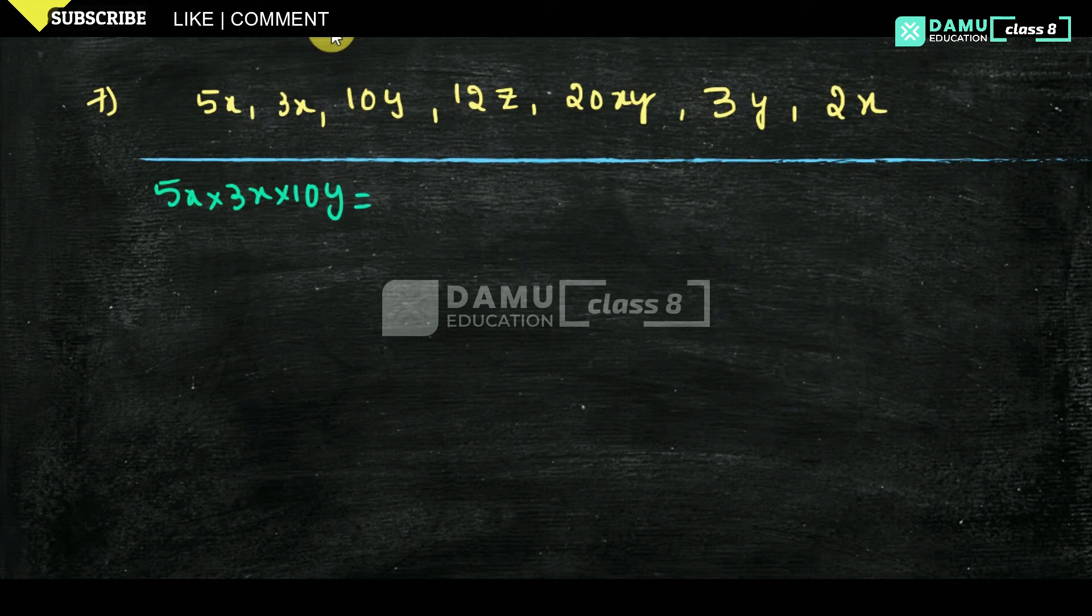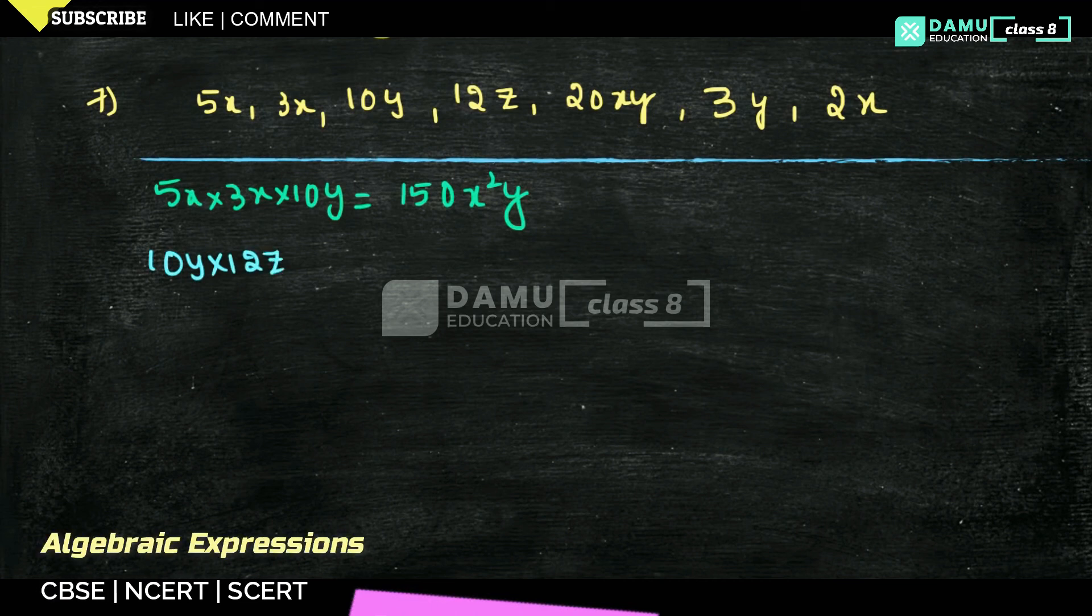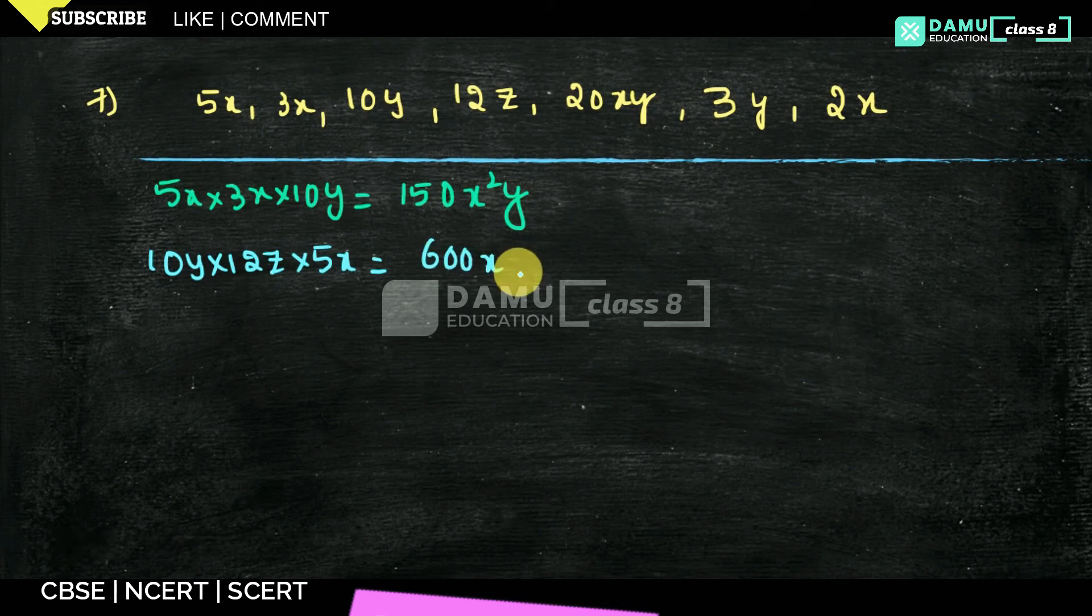Let us take 5x into 3x into 10y. That will be equal to: 5 times 3 is 15, so 150x squared y. Let us take 10y into 12z into 5x. That will be equal to: 10 into 12 is 120, 120 into 5 is 600xyz.